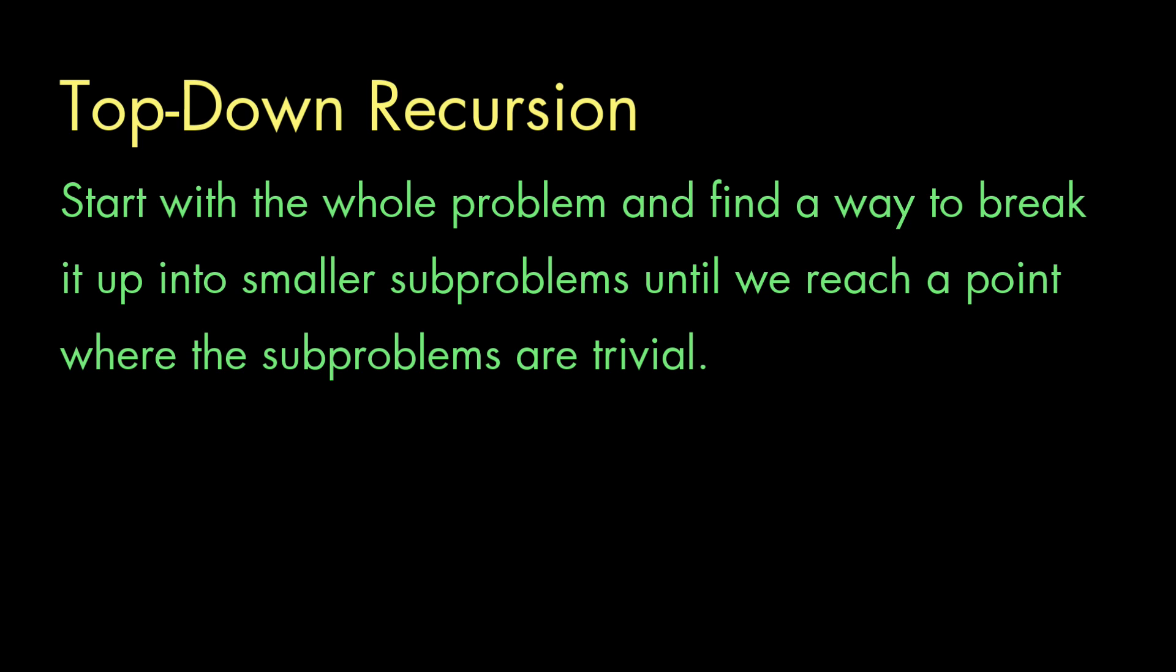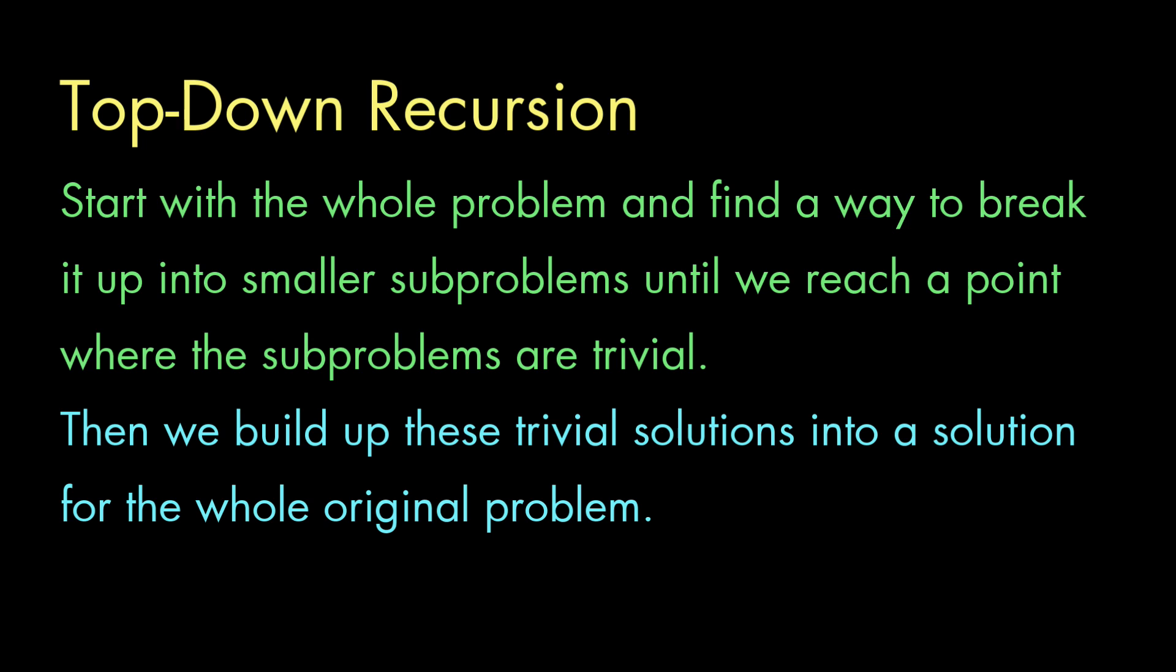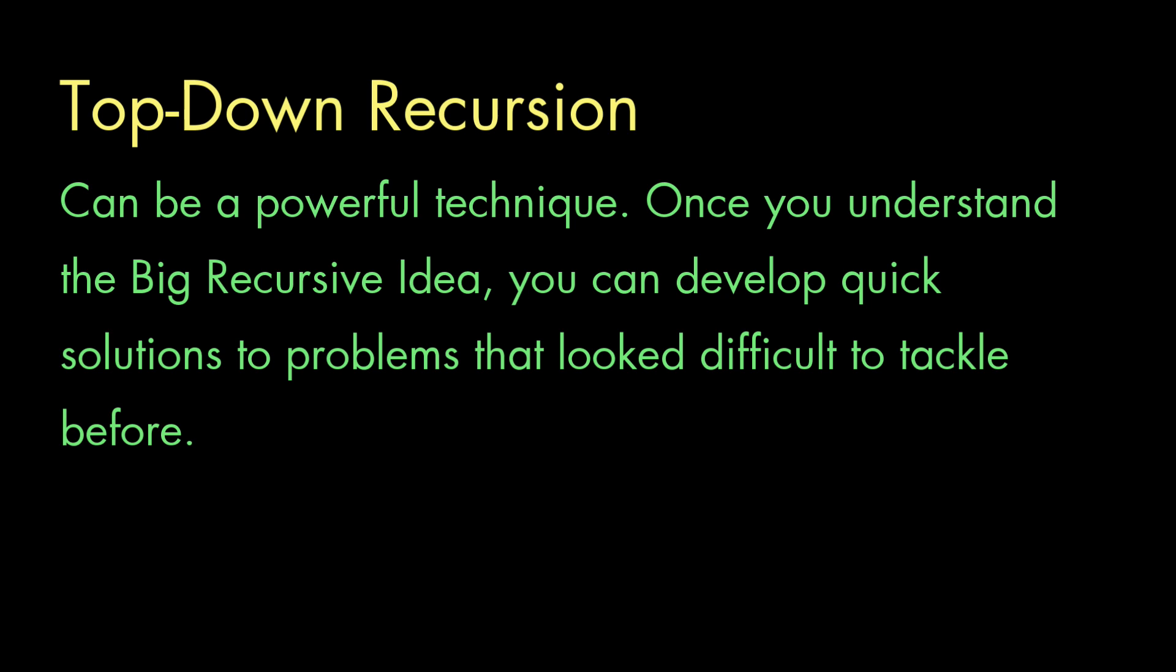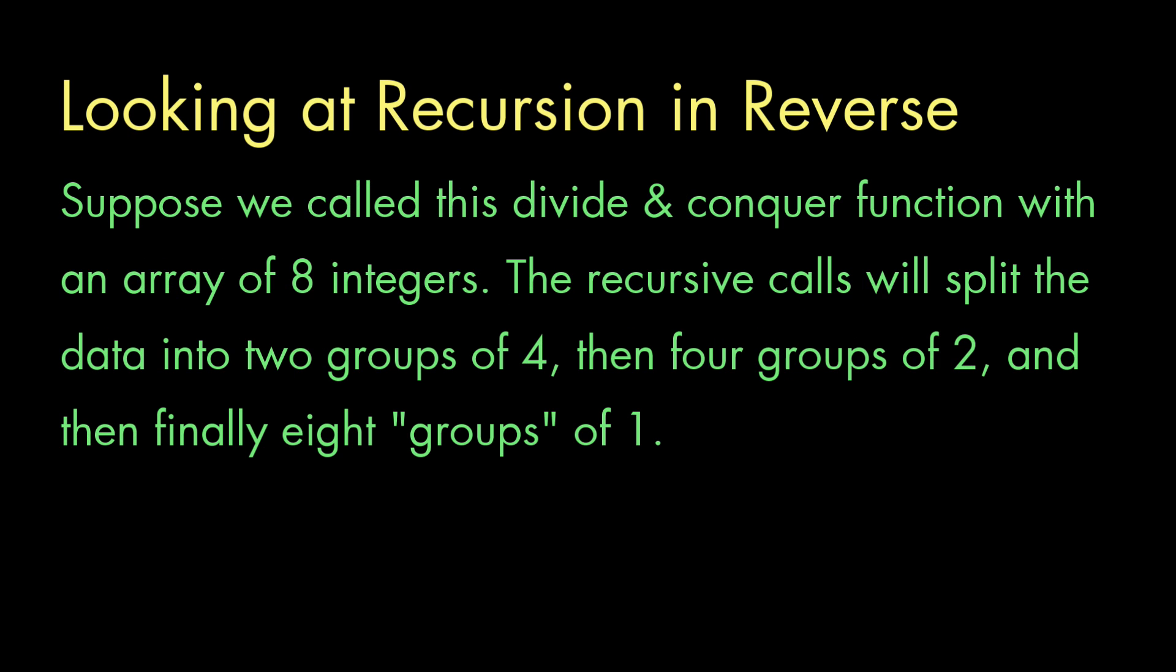So that's top-down thinking. We start with the whole problem we want to solve, and whittle it down to the point where it's trivial. Then turn around and build up these trivial results into a solution for the whole problem again. And this can be a powerful programming technique. Once you understand what I call the big recursive idea, which you can learn about in a previous video, you can use this concept to quickly find solutions to complex problems. But we can think about this approach in a different way.